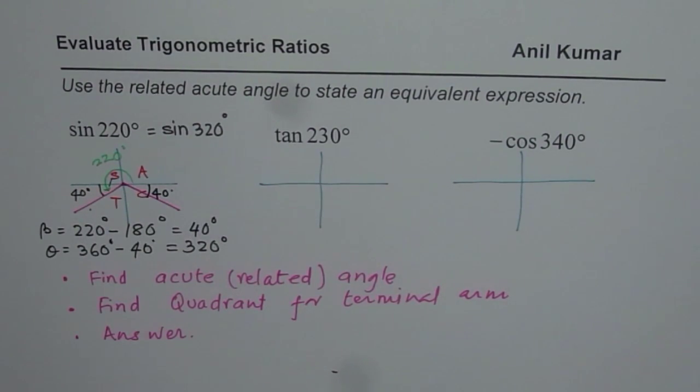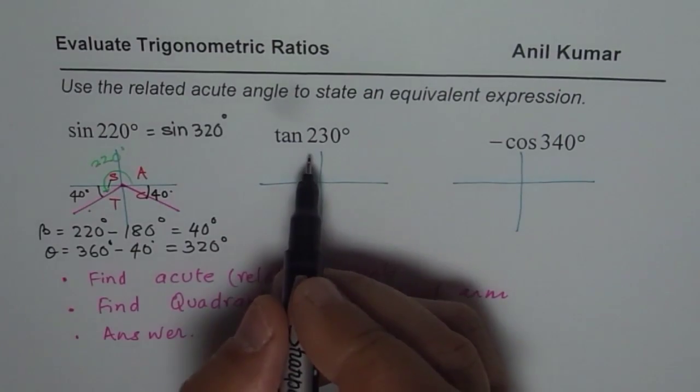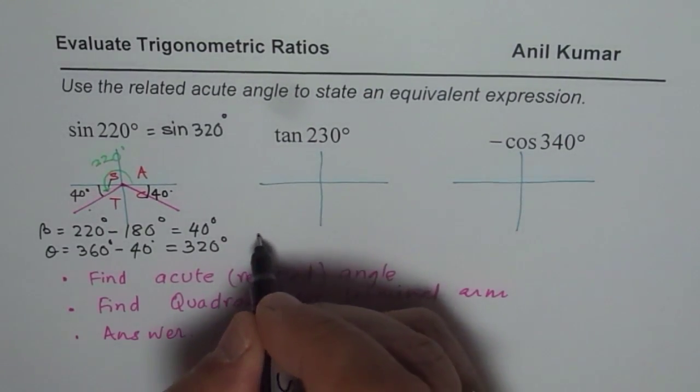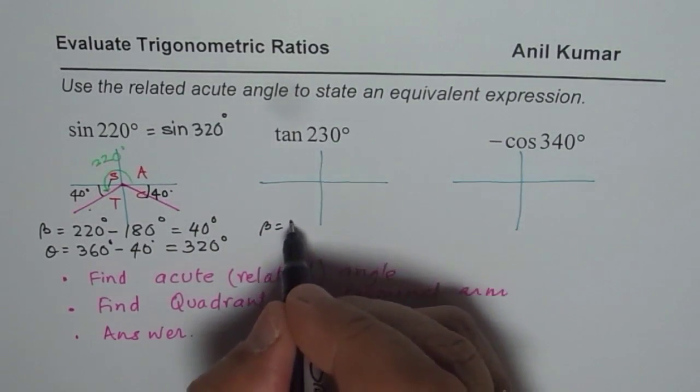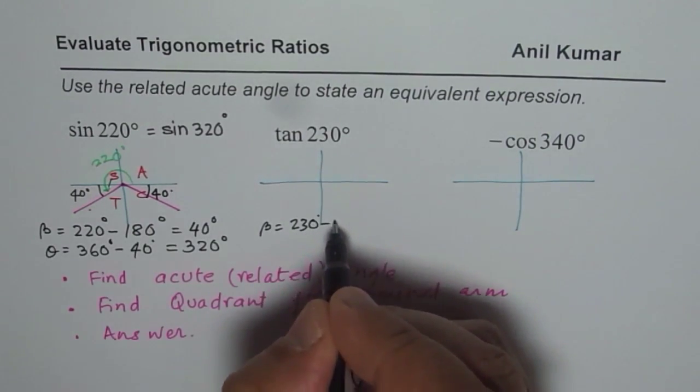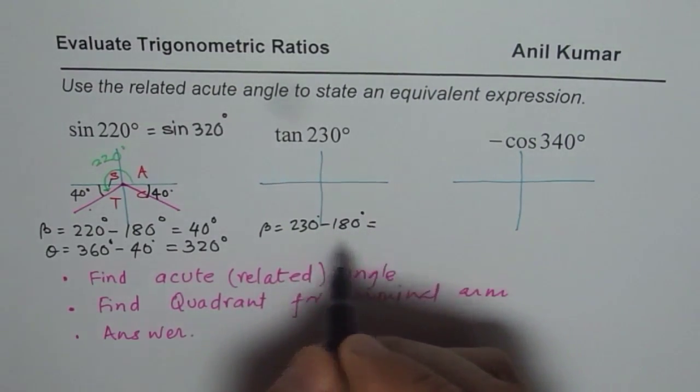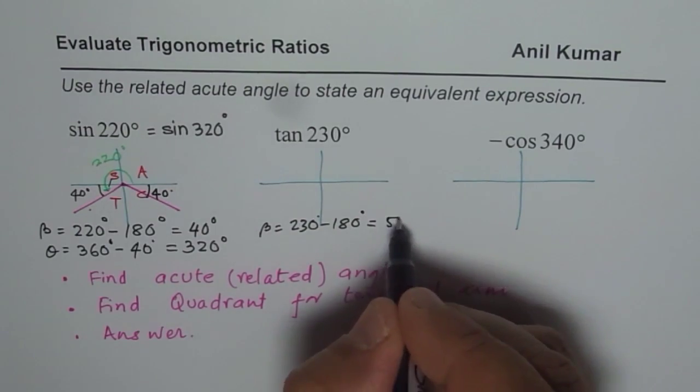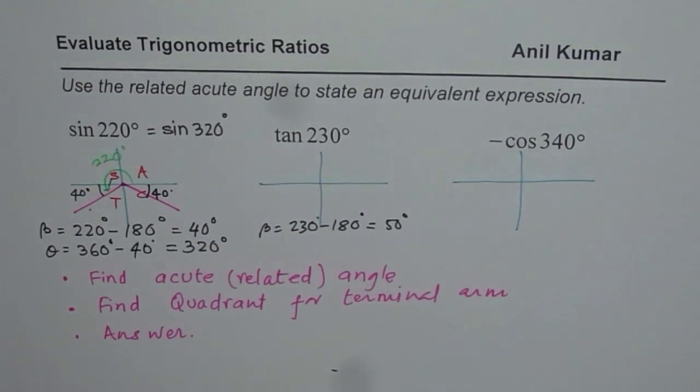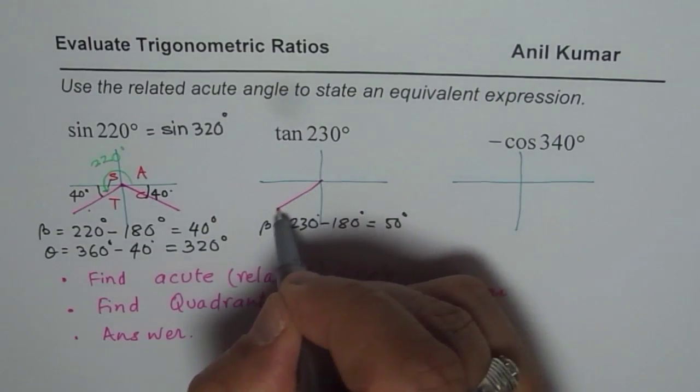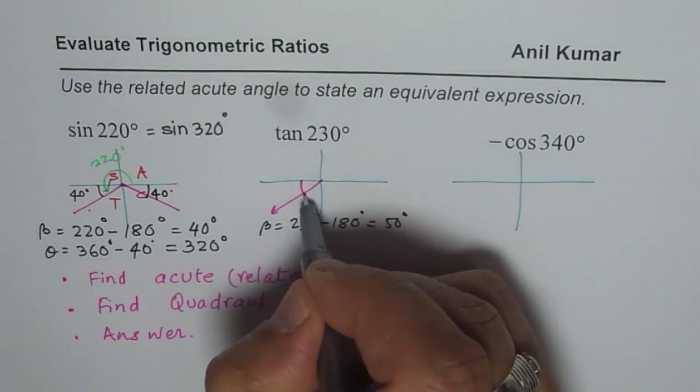I hope the steps are clear. So let us follow this once again. Tan of 230 degrees. Let us find the related acute angle. It is more than 180. So we will do 230 degrees minus 180 degrees. And that is 50 degrees. So we know that the acute angle is 50 degrees.